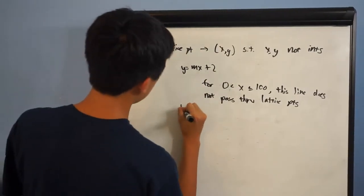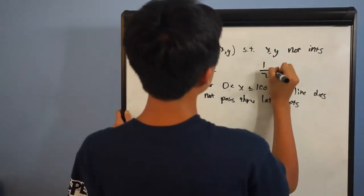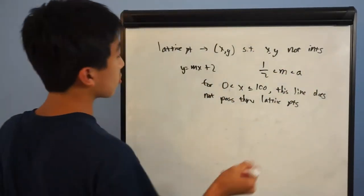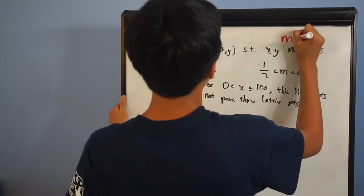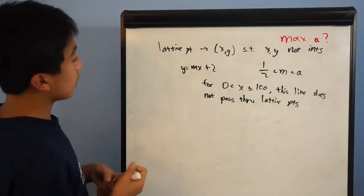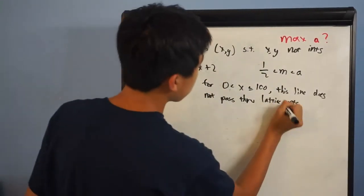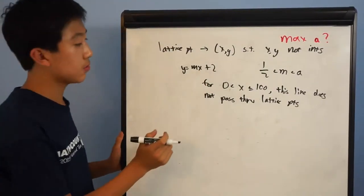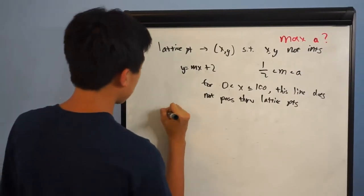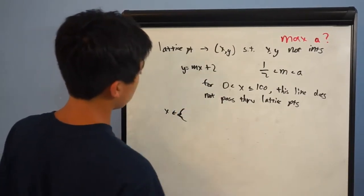We have that m is within the boundary: half is less than m, less than a. And we're trying to maximize a. So let's look at this condition. First, we'll find all points that this line can't pass through. A lattice point requires x to be an integer, so x could be 1, 2, 3, all the way up until 100.